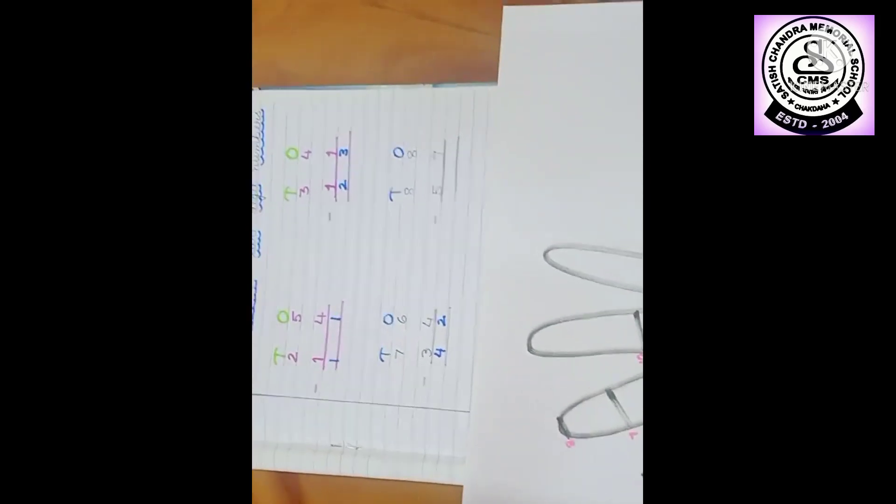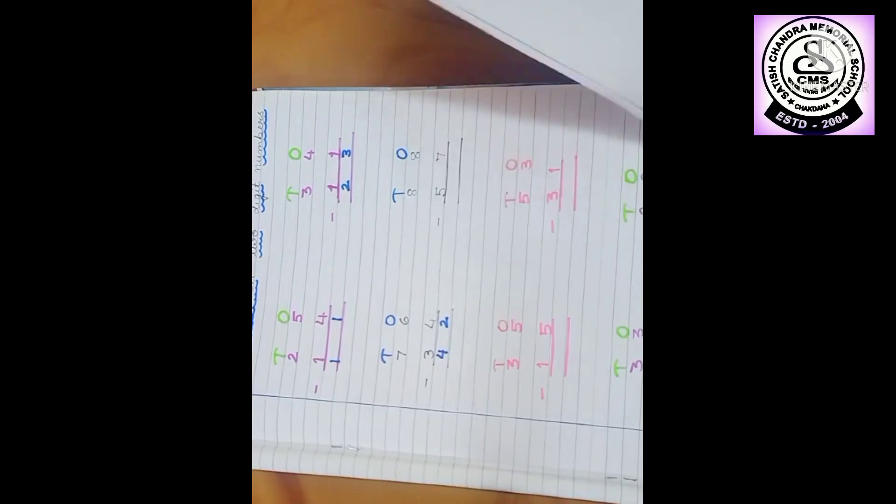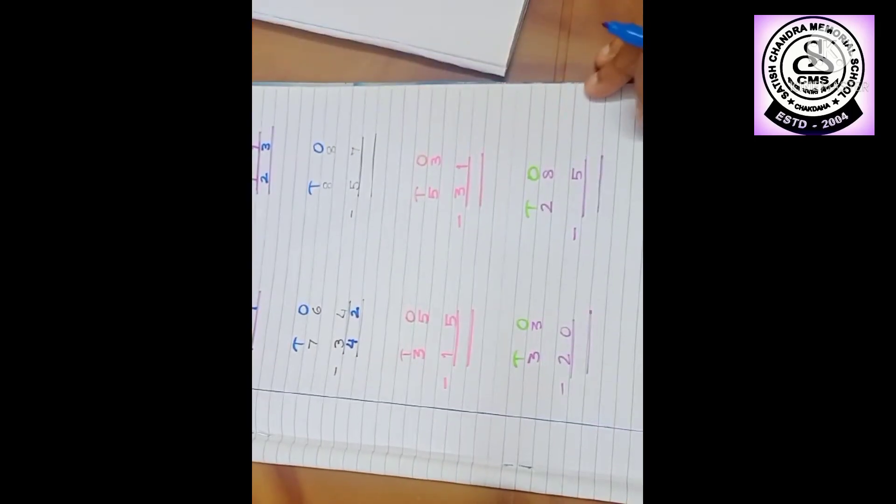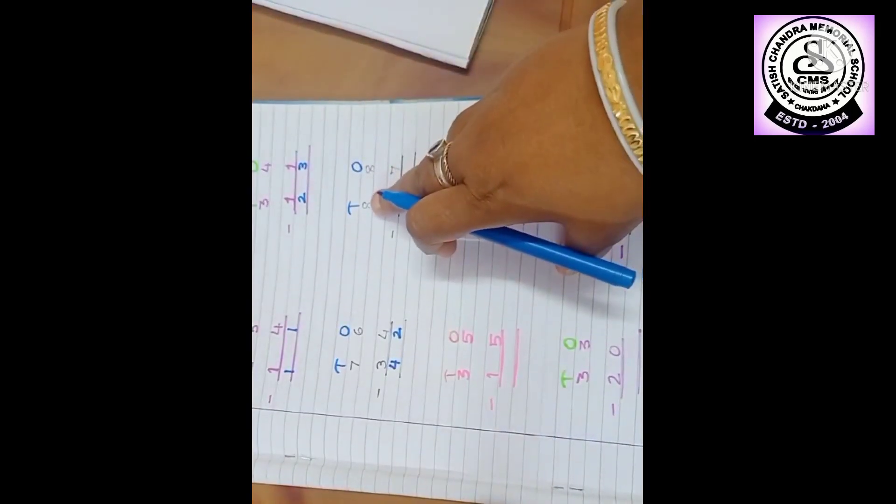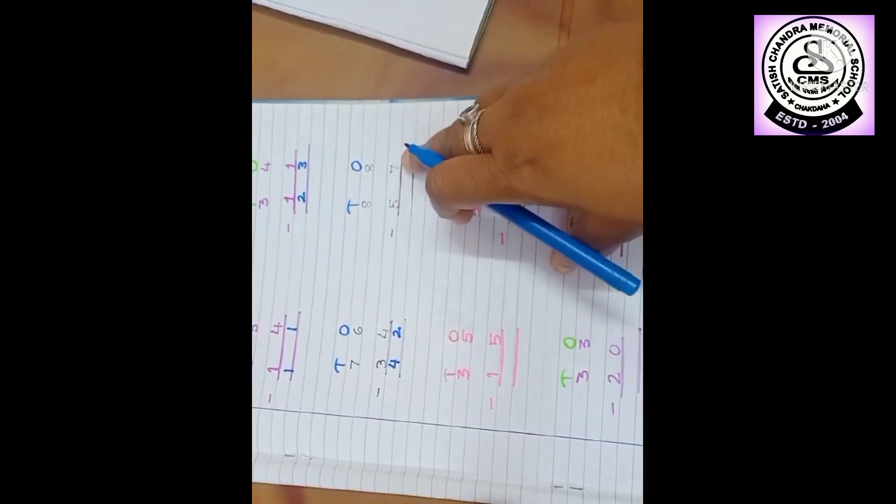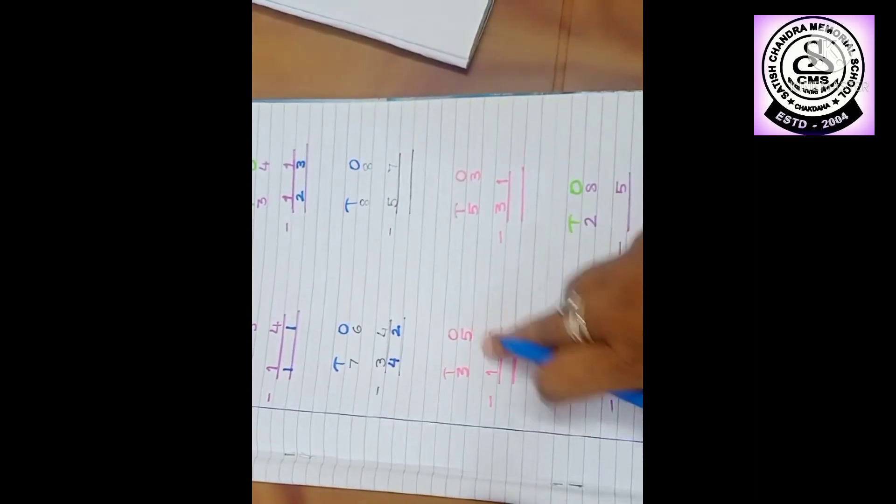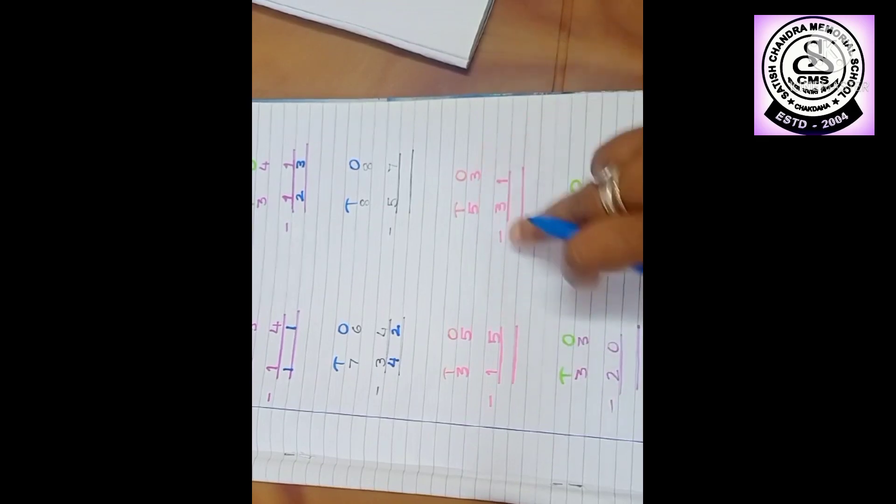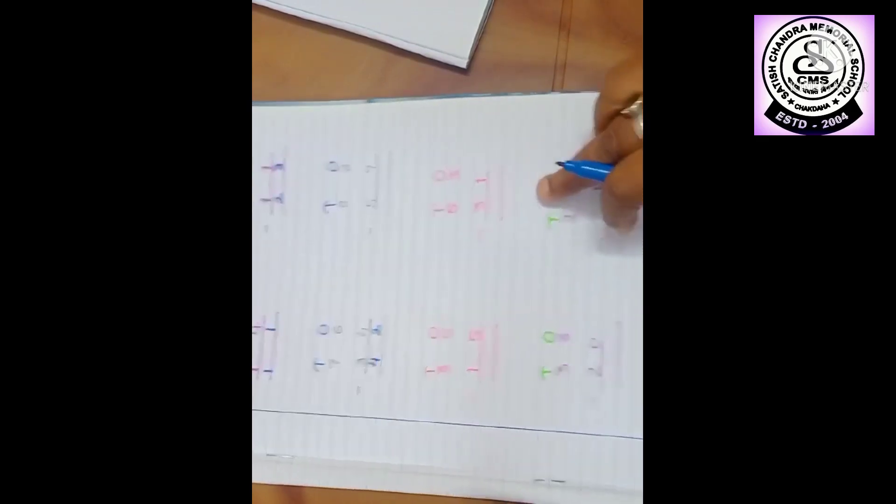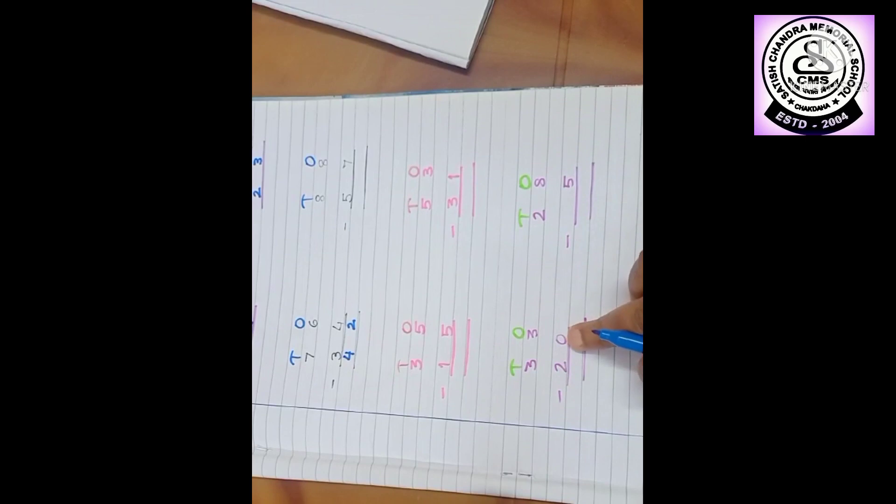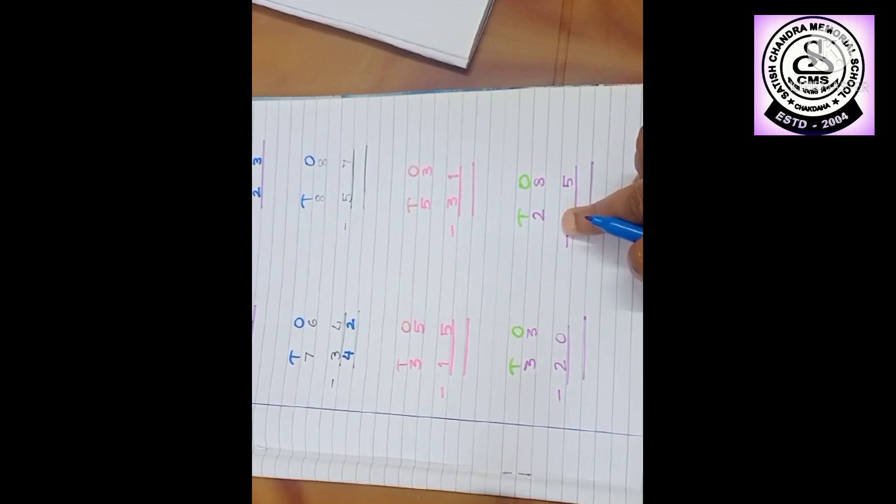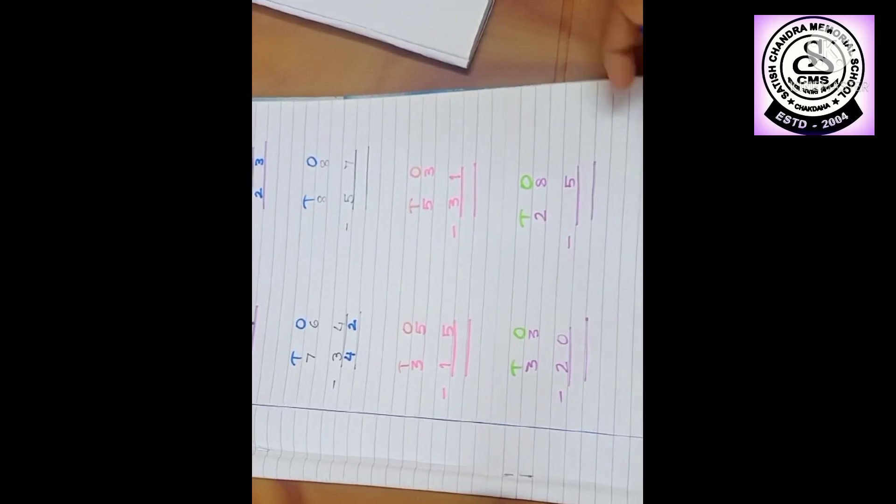In this way you complete the other sums also. Okay, here it is 88 minus 57, 35, 35 minus 15, 53 minus 31, 33 minus 20, 28 minus 5. Here it is 0. If there is no number, you have to count it as a 0. Okay, you have to think, here nothing is there. That means 0. So please.